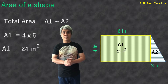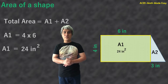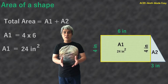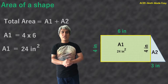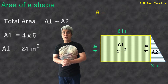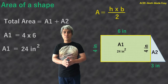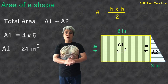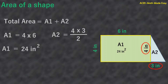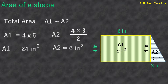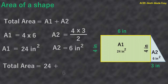Now we will get Area 2. Since the height of the rectangle is 4 inches, it will also be the height for the right triangle. Remember that the formula for the right triangle is: A equals height times base divided by 2. So, Area 2 equals 4 times 3 divided by 2. Our answer is 6 squared inches. Total area equals Area 1 plus Area 2, equals 24 plus 6. So the area of the shape is 30 squared inches.